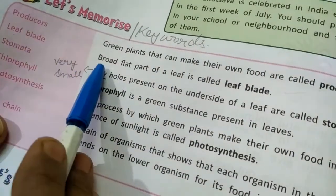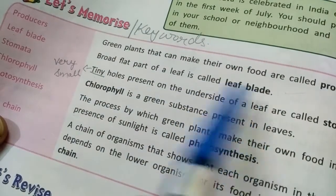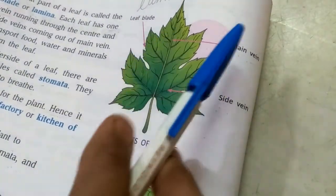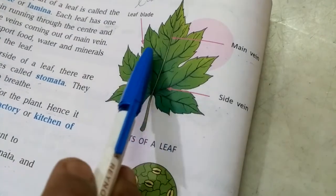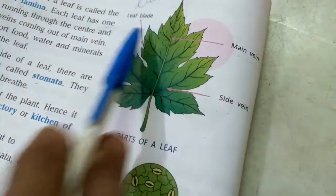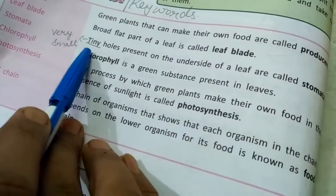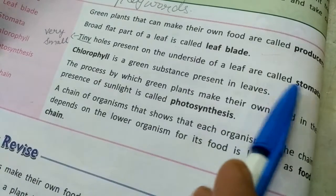Second keyword is 'leaf blade.' The broad flat part of a leaf is called the leaf blade — you have seen this in the diagram as well. Next is 'stomata.' Tiny holes present on the underside of a leaf are called stomata.